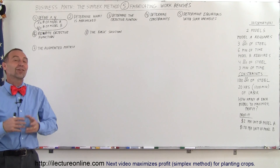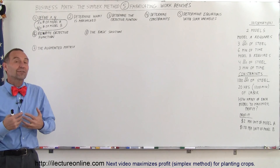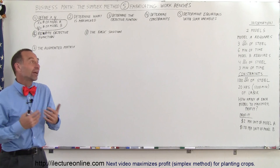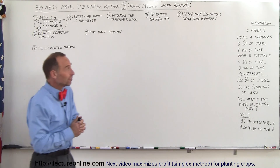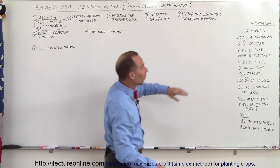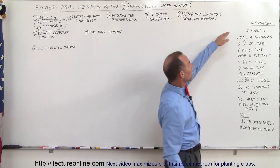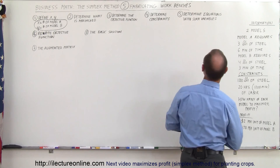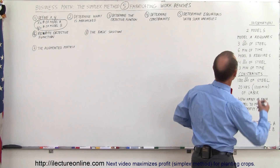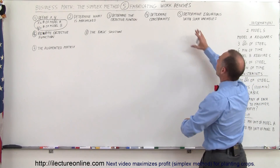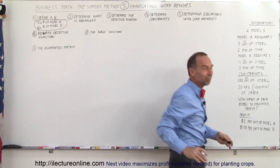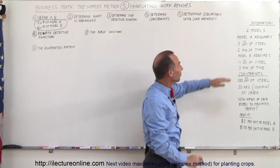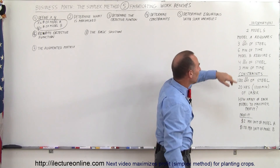Welcome to ElectronLine. Here's another example of how to find the maximum profit by manufacturing something. What we're going to manufacture is two models — we're going to build workbenches. The title says workbenches, so yes we're going to build workbenches. There are two models: Model A and Model B.